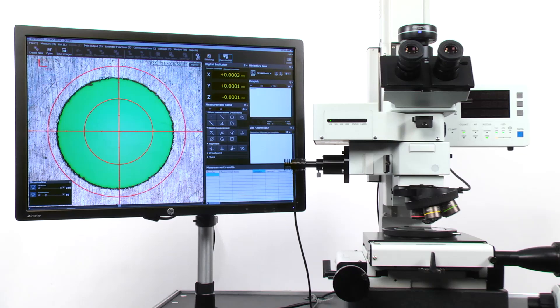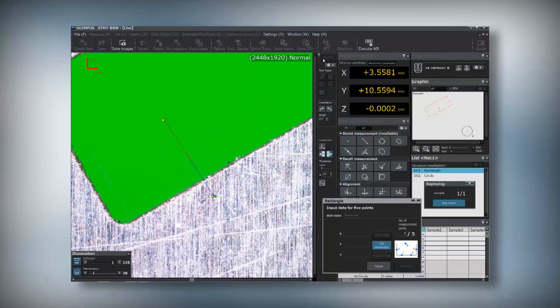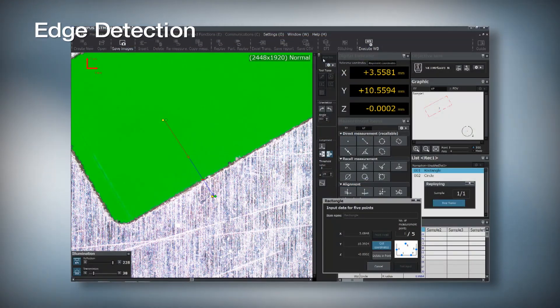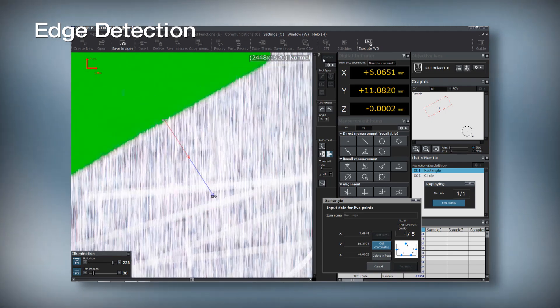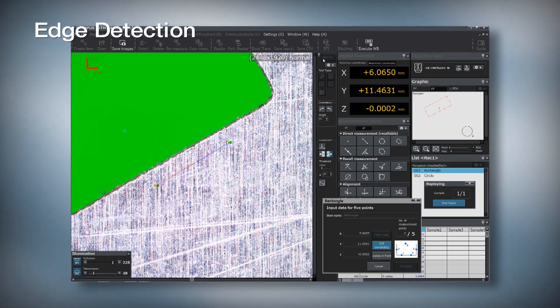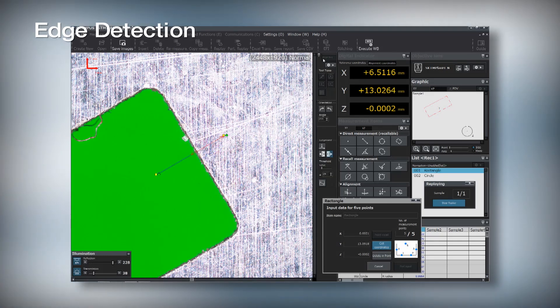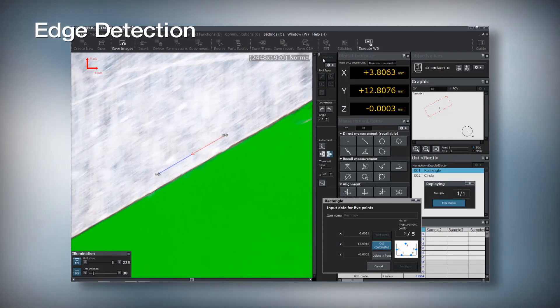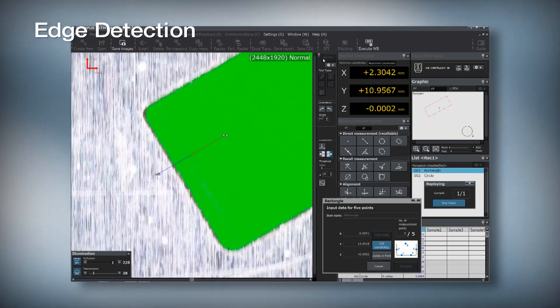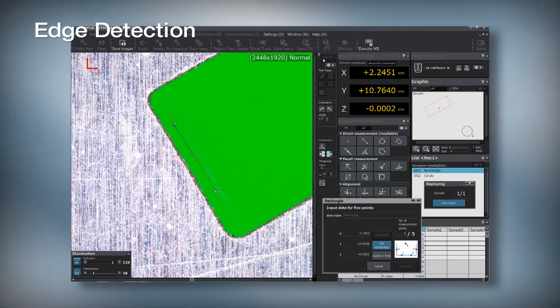Olympus offers software to enhance the microscope's measuring capabilities. Using the software's edge detection function can simplify and speed up measurements. In this example, the software detects five points while the user quickly moves around the sides of the rectangle and obtains results.